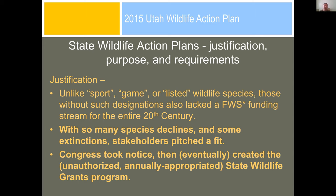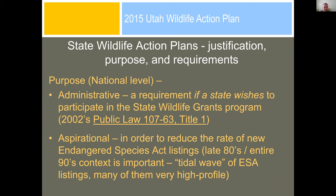With so many species declines and some extinctions, stakeholders justifiably pitched a fit — it's their stuff and it's getting wrecked. So they did what they do, Congress took notice eventually, and they created the State Wildlife Grants program, which is unauthorized and annually appropriated — so not that reliable — but it's been around for about 15 years. If a state wants to get the State Wildlife Grants money, they need to have a SWAP; that was the appropriations law passed in 2002.